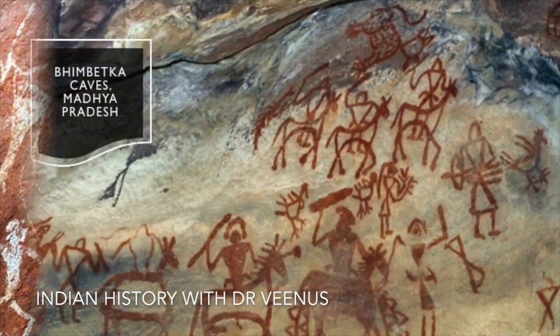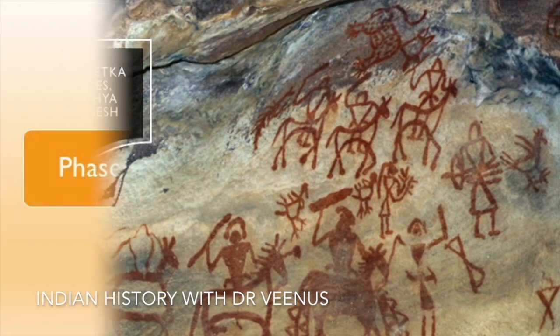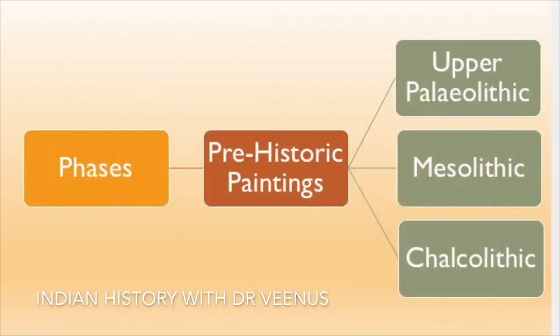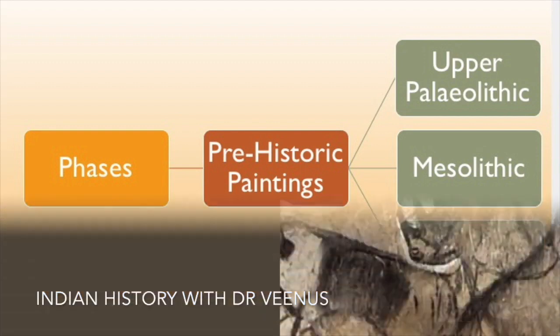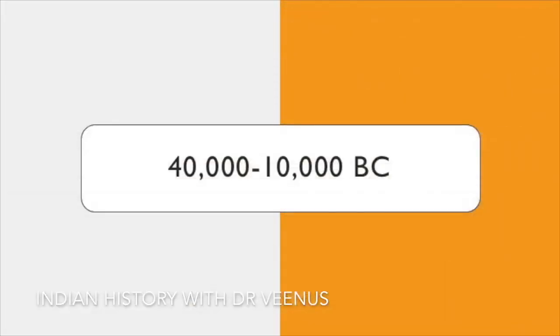Prehistoric paintings were generally executed on rocks, and these rock engravings were called petroglyphs. The first set of prehistoric paintings was discovered in Bhimbetka Caves in Madhya Pradesh. There are three major phases: Upper Paleolithic Period, Mesolithic Period, and Chalcolithic Period. The Upper Paleolithic Period dates to 40,000–10,000 BC.